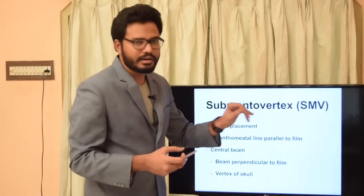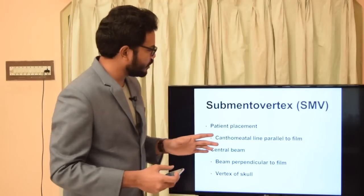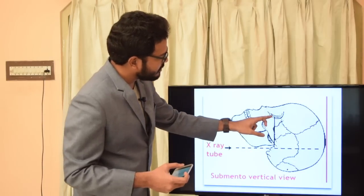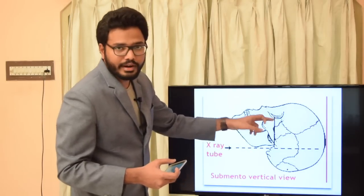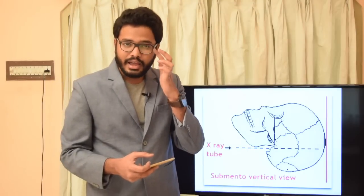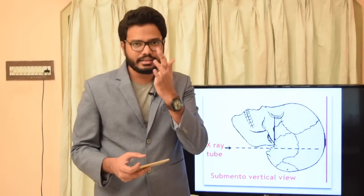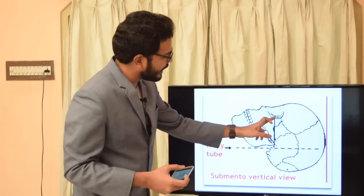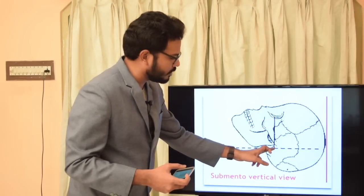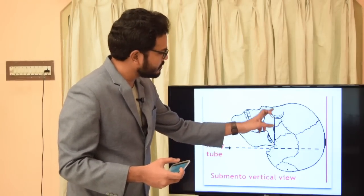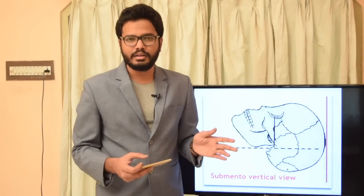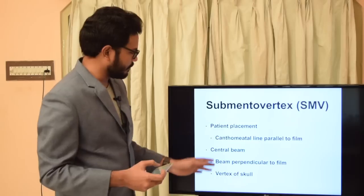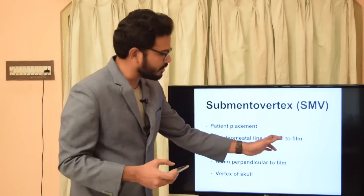In the submental vertex view, the patient orientation is such that the cantho-meatal line is parallel to the film. The canthus is present near the orbit — we have an outer canthus and an inner canthus. The line joining the canthus of the eye to the external auditory meatus is called the cantho-meatal line, which helps orient the patient with respect to the film.